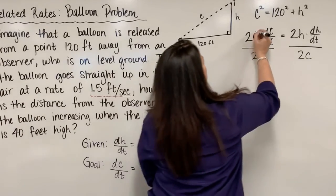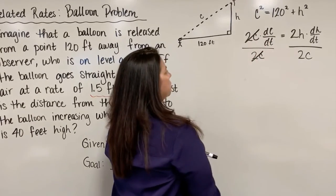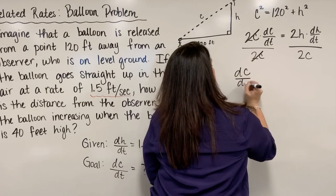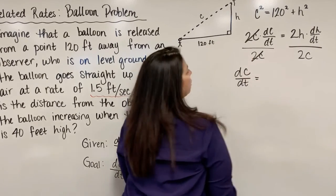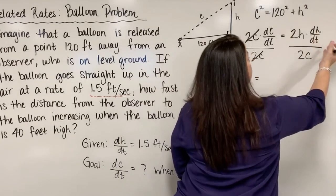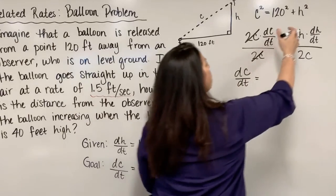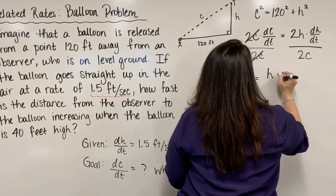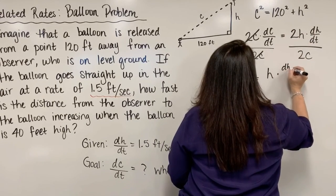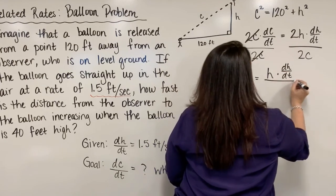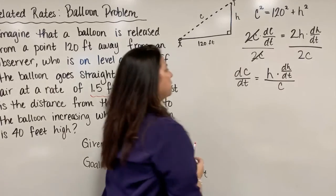On the left side of the equation, 2c divides out with this 2c. What remains is dC/dt, which is equal to, on the right-hand side, I can take care of my 2s, those divide out. What remains is my h times my dH/dt, the rate of change of the height with respect to time, divided by c.